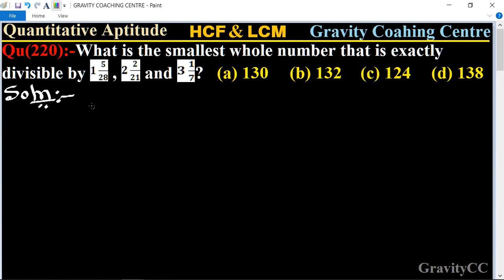Quantitative aptitude, chapter HCF and LCM, question number 220. What is the smallest whole number that is exactly divisible by 1 whole number 5 upon 28, 2 whole number 2 upon 21, and 3 whole number 1 upon 7?